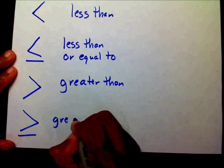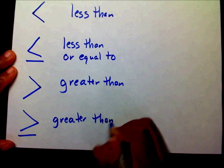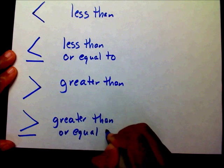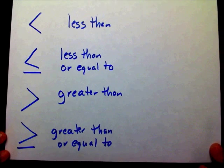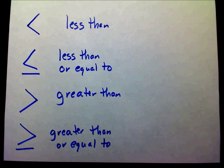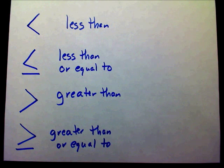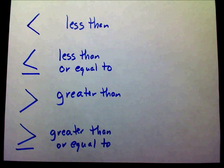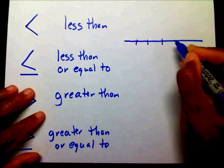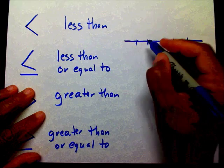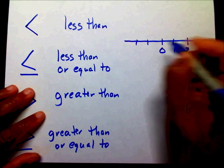A lot of people get these signs mixed up. You hear people talking about the alligator — the alligator points to the biggest number. Well, just in case you can't remember that, if you think of a number line, a number line has less than and greater than signs on it. I don't know if you've ever noticed it, but they're there.